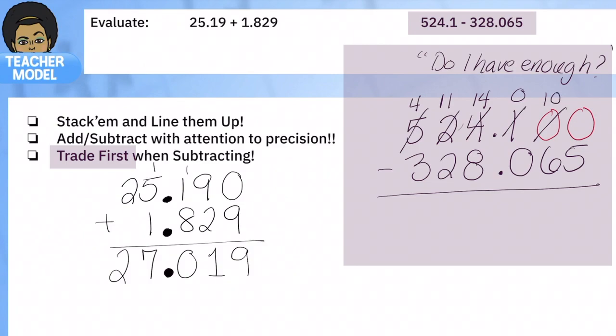And lastly, 0 minus 5, no I do not have enough, so I'm going to regroup again. Now that I've done all my trading first, look how quick and fast my subtraction is going to be: 10 minus 5, 9 minus 6, 0 minus 0, 14 minus 8, 11 minus 2, and 4 minus 3, and finished.